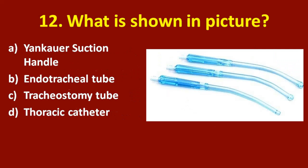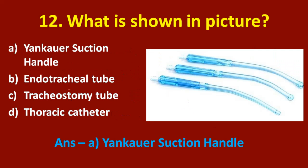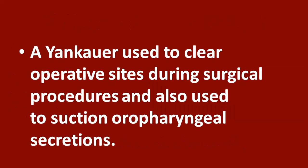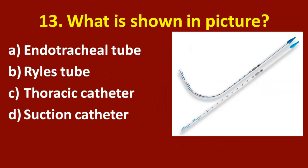Twelfth question: what is shown in the picture? Option A: Yankauer suction handle. Option B: endotracheal tube. Option C: tracheostomy tube. Option D: thoracic catheter. The correct answer is option A, Yankauer suction handle. A Yankauer is used to clear operative sites during surgical procedures and also used to suction oropharyngeal secretions.